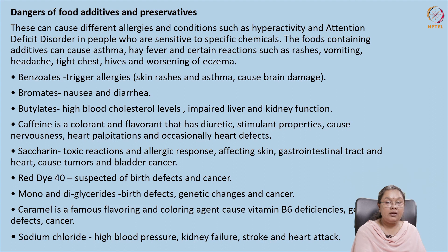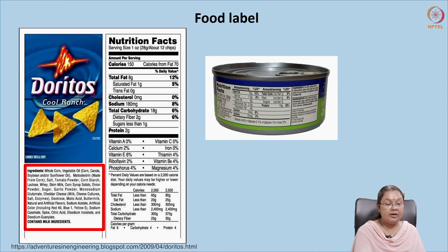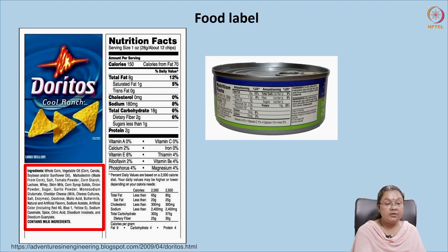It is important that we label food products properly. For example, in the product Doritos, red color has been used, and this is mentioned on the label as Blue 1, Yellow 5 — whatever colors and ingredients have been used as additives need to be labeled. They have also mentioned that it contains milk as an ingredient, so people who are allergic to milk can avoid the product. Labeling is very important, especially from the additive perspective.